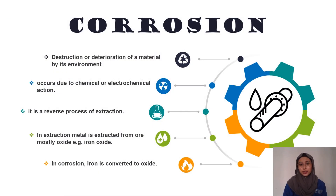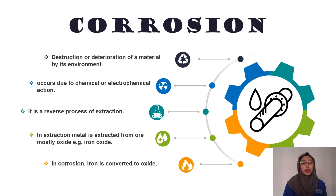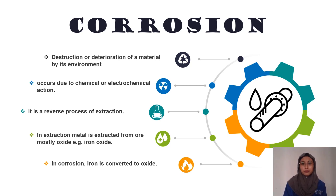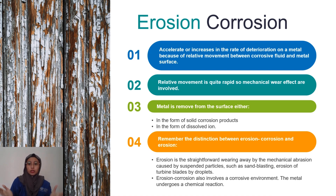Corrosion is a destruction or deterioration of material by the environment. It occurs due to chemical or electrochemical action. It is a reverse process of extraction — in extraction, metal is extracted from its oxide, for example iron oxide. In corrosion, iron is converted back to oxide.